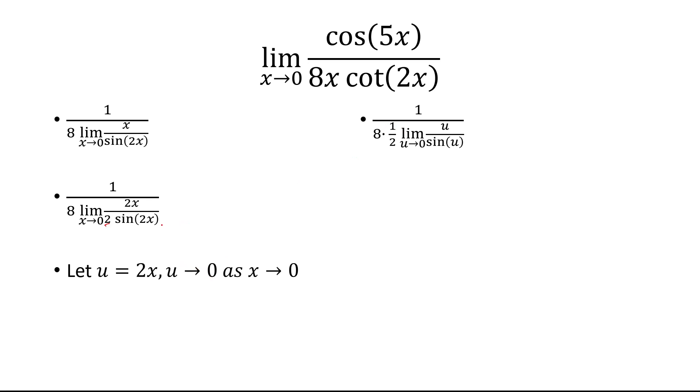So basically this 2 comes out as a half. And this limit turns into limit as u approaches 0 of u over sine u. And right now I have 1 over a limit, which I could just rewrite this as limit. And then it's basically 1 over the reciprocal, or the reciprocal is 1 over the limit.